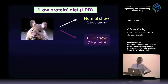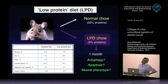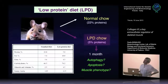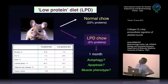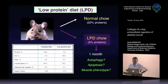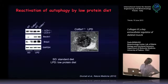We contacted a company to design a diet decreasing protein content. Proteins contain amino acids, so decreasing dietary protein is a simple way to reduce amino acid availability. The low-protein diet has the same calories — the same amount of energy — but protein content decreases from 22% to 5% — one-fourth of the normal level. We fed the mice this low-protein diet for one month and checked autophagy induction, apoptosis, muscle phenotype, and strength. After one month the low-protein diet activated autophagy: LC3 lipidation, Beclin-1, Nip3, and autophagosome formation were at similar levels in wild-type and knockout.